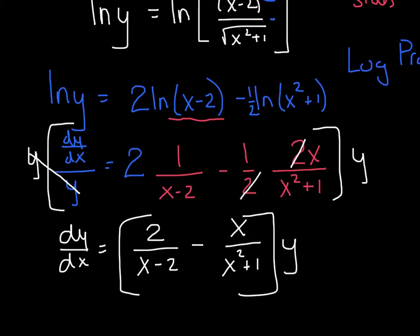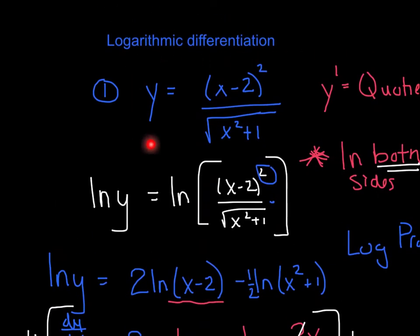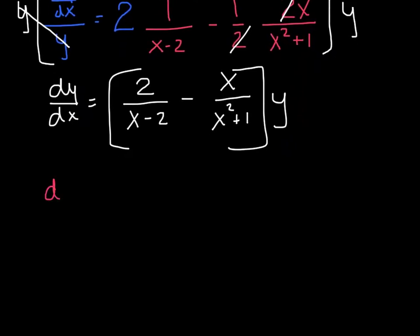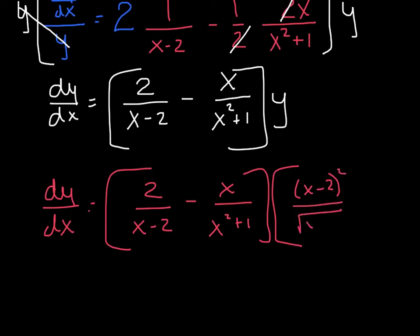Now here is the one little trick you do want to make sure you catch: we don't want to leave x's and y's in the problem. Remember, the equation started with y equals - if I go back and look, we know what y is. We need to take what this equation is for y and substitute it into our final answer. So my final answer, dy/dx equals: I've got 2 over x minus 2, minus x over x squared plus 1, times - in place of y, I'm putting that original function - x minus 2 squared over the square root of x squared plus 1.